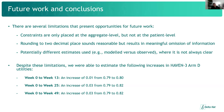Despite these limitations, we were ultimately able to provide an estimate using this linear programming approach for the HAVEN3 Arm D utilities that were previously unreported. Specifically, we estimated an increase of 0.03 from week 0 to week 49, from 0.79 up to 0.82. Thank you for listening.